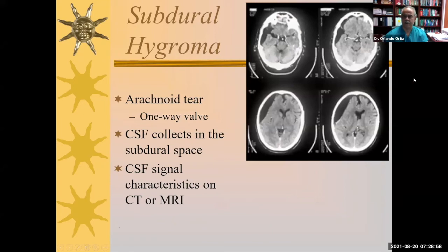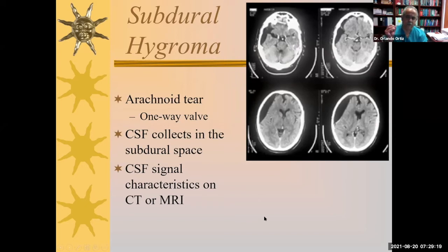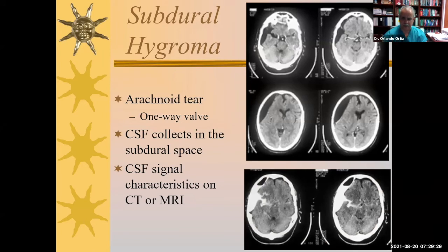Subdural hygromas are related to arachnoid tears — true CSF collections within the subdural space. They are low attenuation on CT, equivalent to CSF within the ventricular system, well-defined, and related to a ball valve phenomenon where there's communication with the subarachnoid space and CSF pulsations cause the collection to grow and create mass effect. In this case, a drain was placed and contrast injected to show communication with the middle cerebral artery cistern.